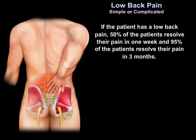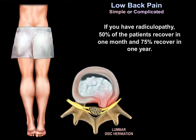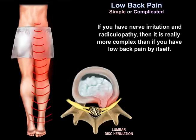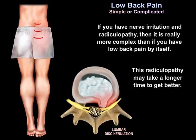If the patient has low back pain, 50 percent resolve their pain in one week and 95 percent resolve in three months. But if you have radiculopathy, 50 percent recover in one month and 75 percent recover in one year. So nerve irritation and radiculopathy is more complex — it takes longer to get better.